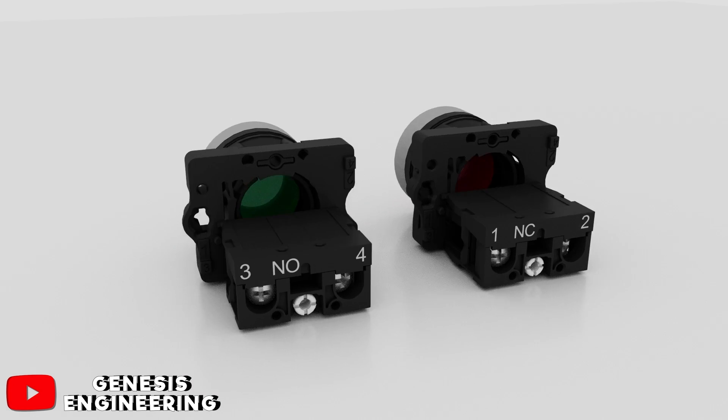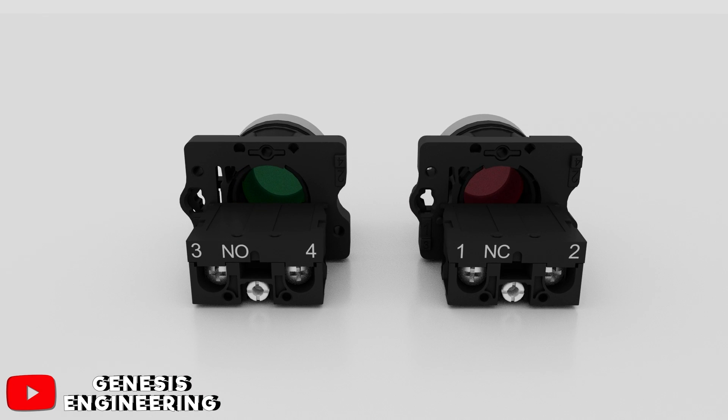These buttons are not just the colors that are different, the contacts too. The green button to start the motor has the normally open N.O. contact, working as follows: without power the contact is open and when the button is pressed the contact will close and the motor will start. The normally open green button has terminals 3 and 4, where 3 is the input and 4 is the output.